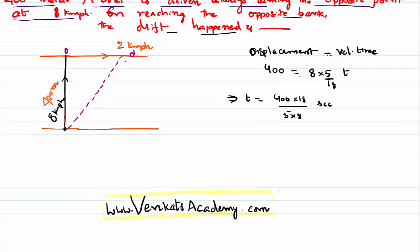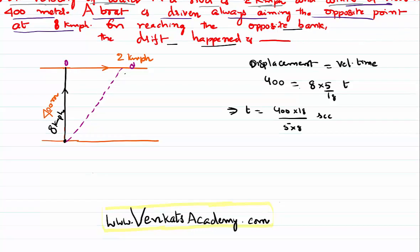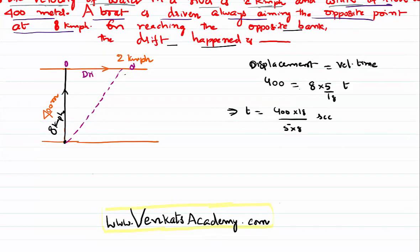The distance between them is actually called drift. The boat is supposed to reach point O but because of the push of the river it reaches point O dash. The gap between them is called drift, and the drift happened in the horizontal direction because of the velocity of the river.